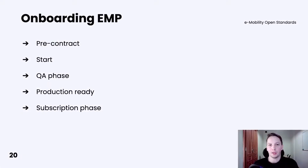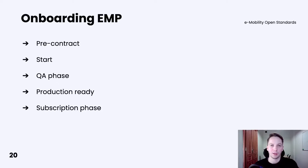Onboarding an EMP is very similar to onboarding a CPO — there are just small differences. In the pre-contract phase, you will define your provider ID, as well as generate CSR and whitelist your server IP. In the onboarding start phase, you are responsible for sending RFID cards to Hubject for test purposes. The QA phase and production ready phase are almost the same.